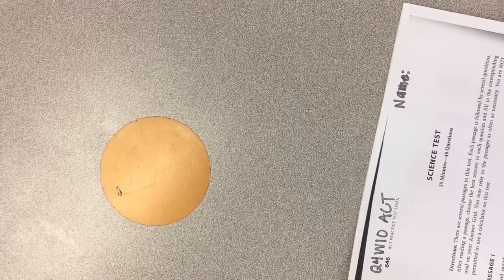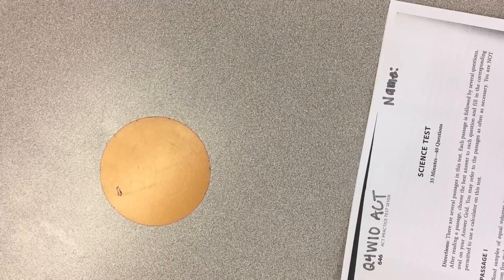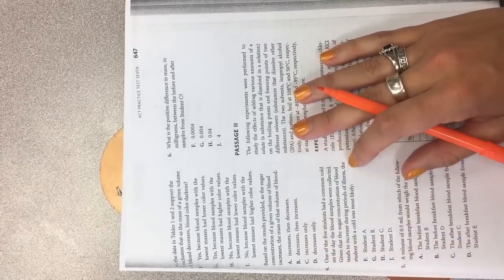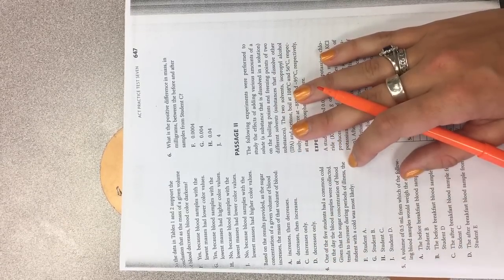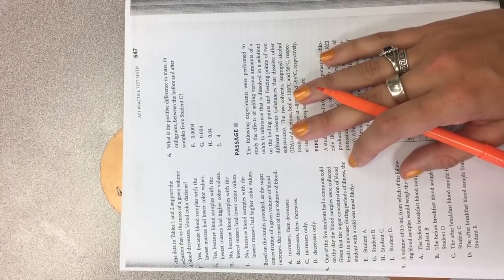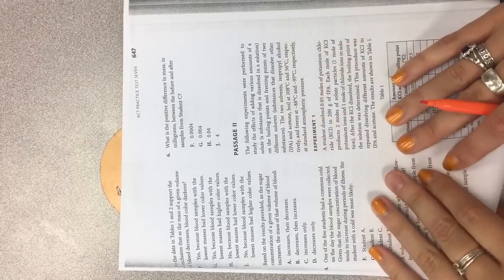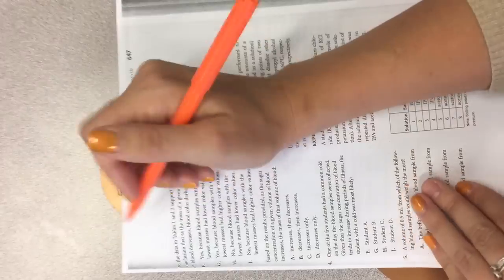Alright, number two. Did the data in table one and two support the conclusion that as a mass of given volume of blood decreases, the blood color darkens? Yes, because blood samples are the lowest masses. Okay, so as the mass decreases, the color darkens.